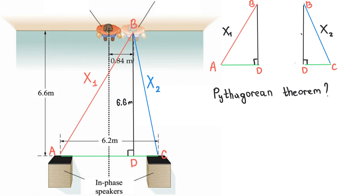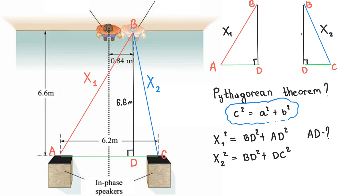By the way, I forgot, what is the formula of the Pythagorean theorem? Yep, hypotenuse square is equal to the sum of squares of the legs. x1 is the hypotenuse of the ABD triangle. We know BD is equal to 6.6 meters. What about AD? What is the value of it?